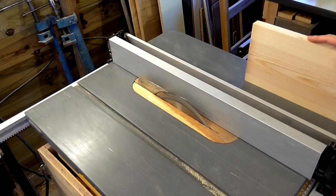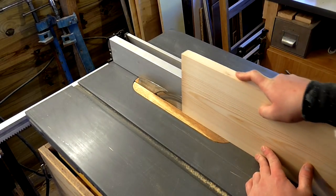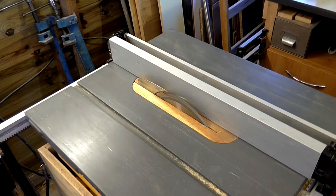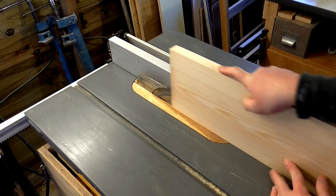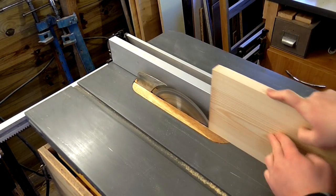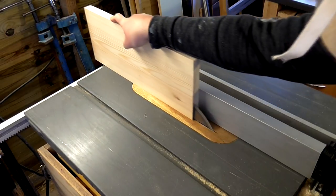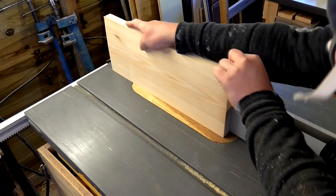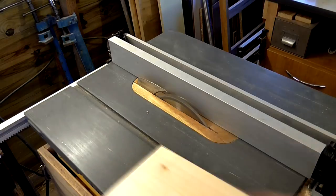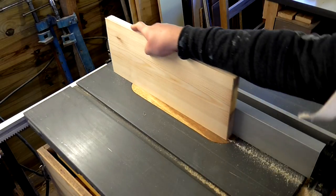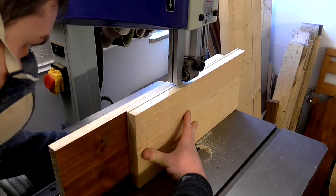I'd need two very thin pieces to make the soundboard. I made several passes on the table saw, raising the blade each time, and then cut out the middle section on the bandsaw.